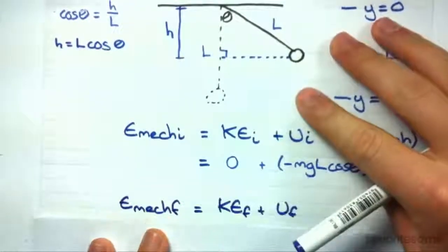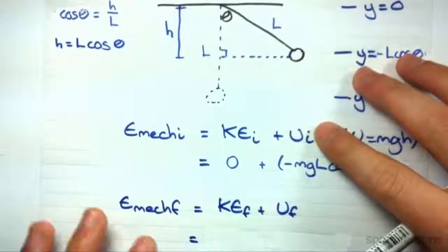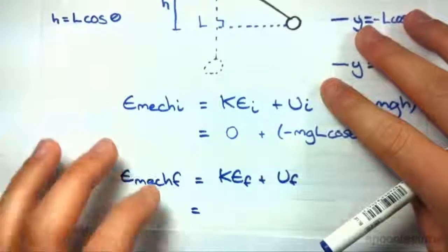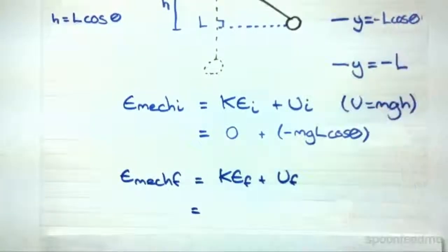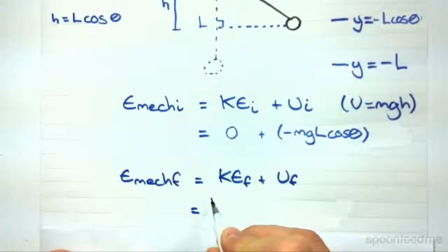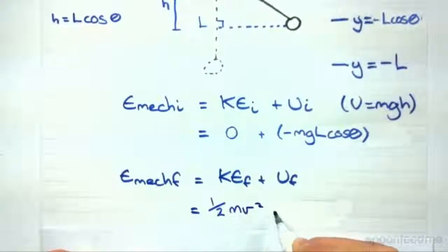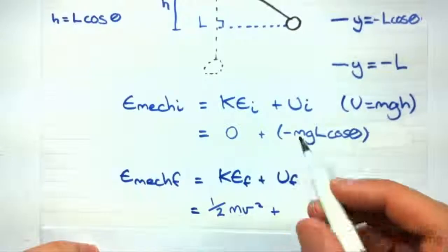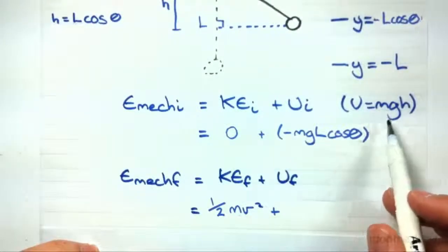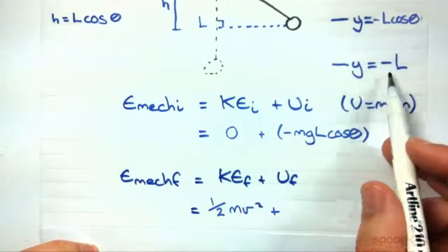Now let's look at the final mechanical energy. So same formula. We can sub in some values. Well the final kinetic energy, we're not sure, but what we can do is just sub in the formula that we know for kinetic energy. And the final potential energy, well that is simply just using this formula again, and now the height is minus L.